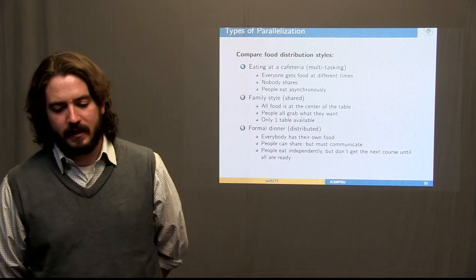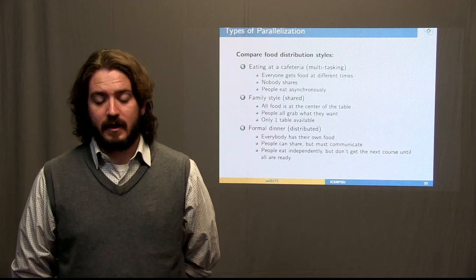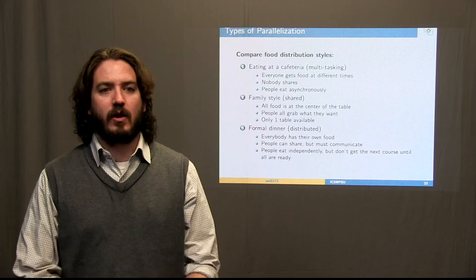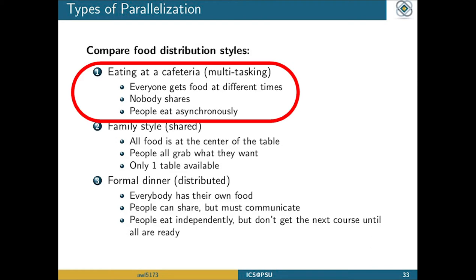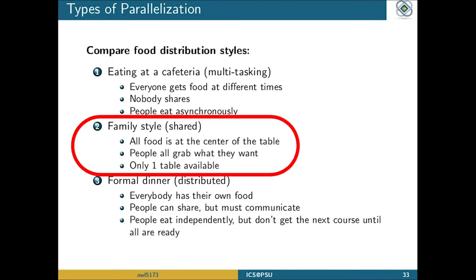Parallelization is a little difficult, so I'm going to compare it to food distribution styles. One way is going to a cafeteria: everybody goes through the line at their own pace, grabs whatever food they want, nobody's sharing food, and you can start eating whenever you're ready — the first person in line might already be done eating by the time the last person gets started. This is a multitasking type of eating. Another approach is family style — a shared meal where everybody sits around one table with big bowls in the middle, everybody sharing, and only one person has access to a resource at a time, like passing the bowl of mashed potatoes. With family style, there's only one table, so you might not be able to seat as many people as you'd want.